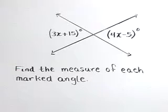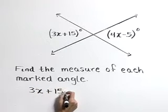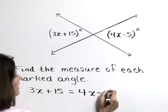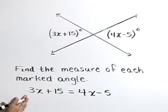We know vertical angles to be equal in measure, so we can use that fact to write an equation that sets 3x plus 15 equal to 4x minus 5. We have our equation, now let's solve it.